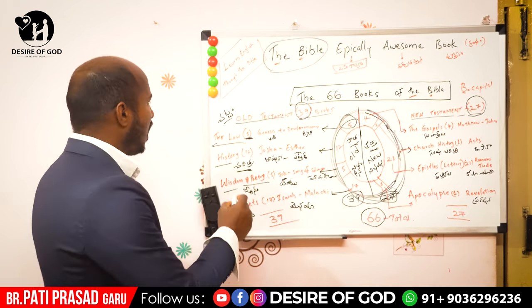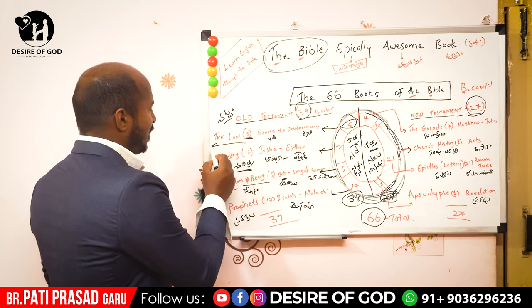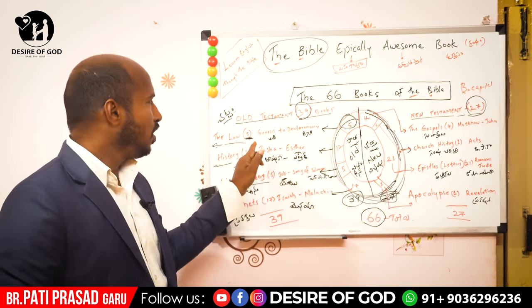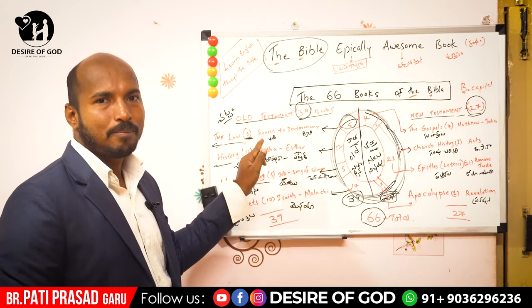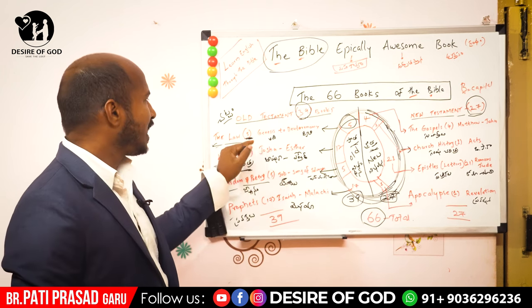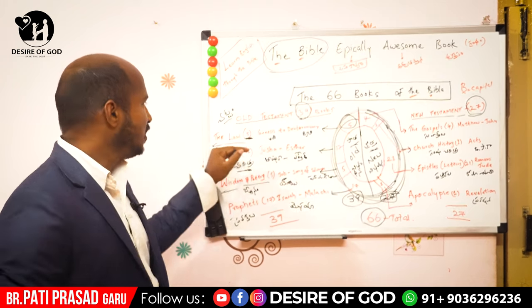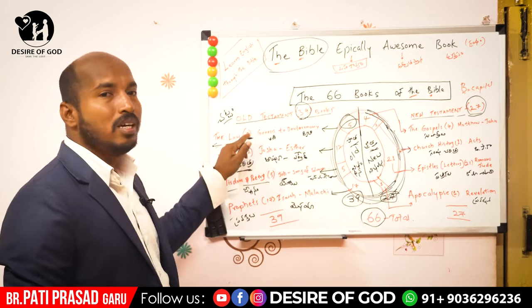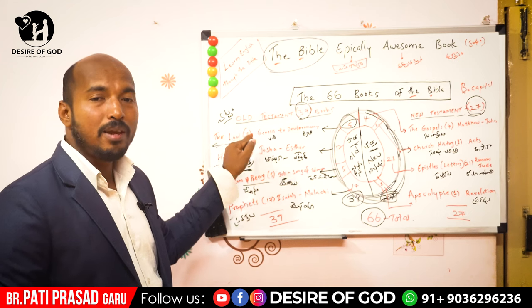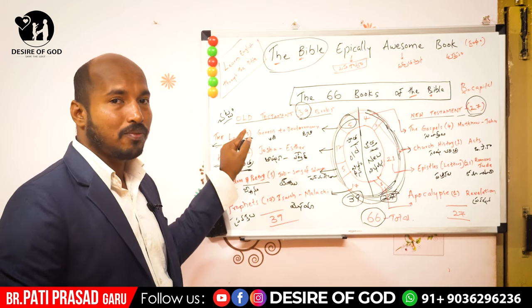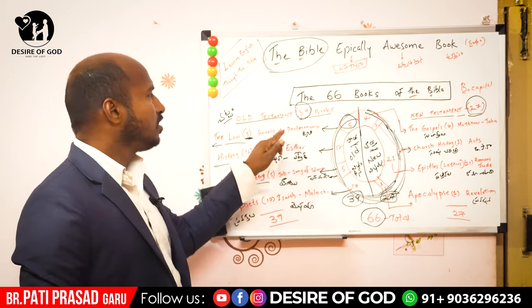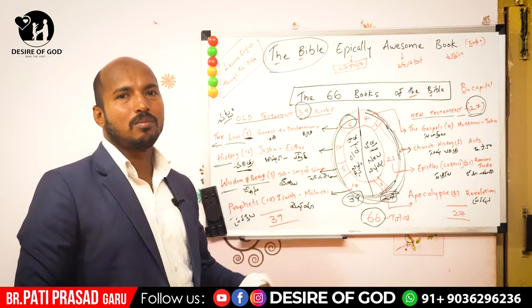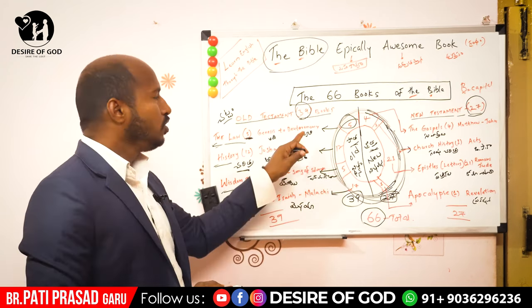There are four sub-categories. The first category has five books — the Law. These are Genesis, Exodus, Leviticus, Numbers, and Deuteronomy.